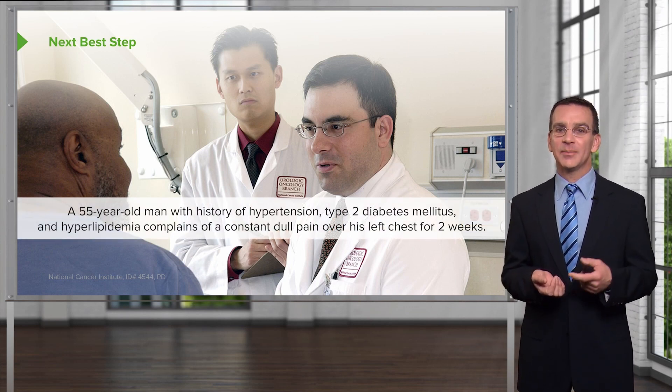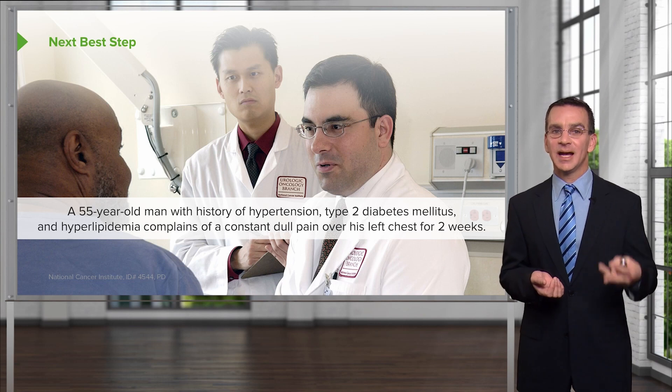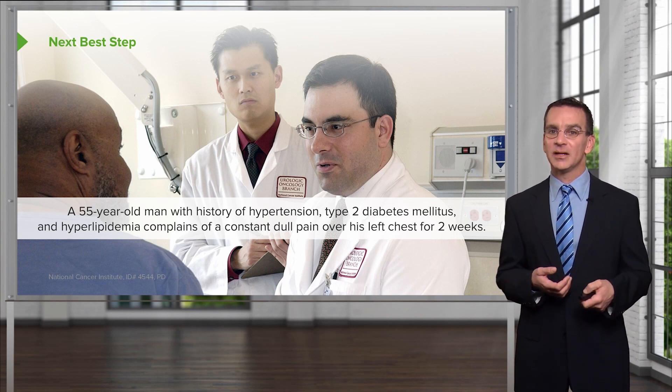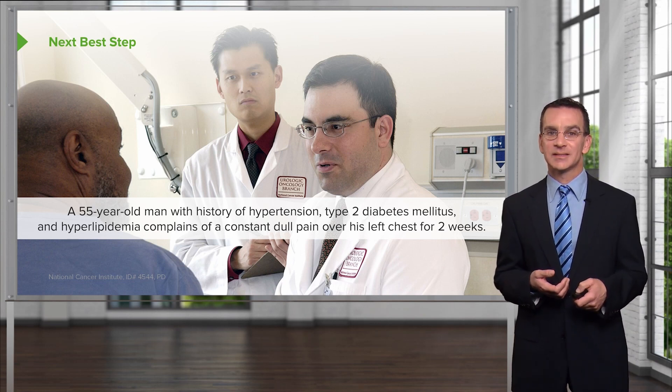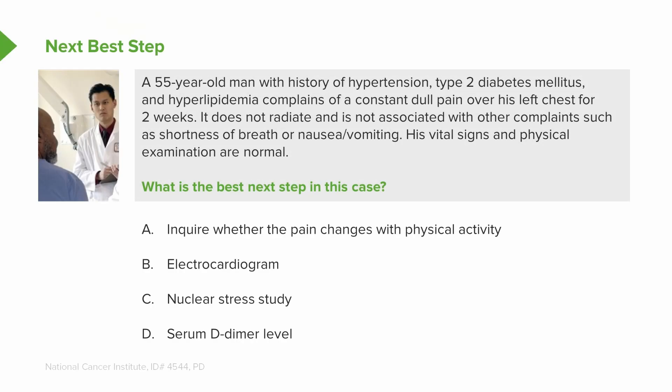The pain does not radiate and is not associated with other complaints such as shortness of breath or nausea and vomiting. His vital signs and physical examination are normal. What's the next best step? A: inquire whether the pain changes with physical activity. B: order an electrocardiogram straightaway. C: nuclear stress study. Or D: serum D-dimer level.